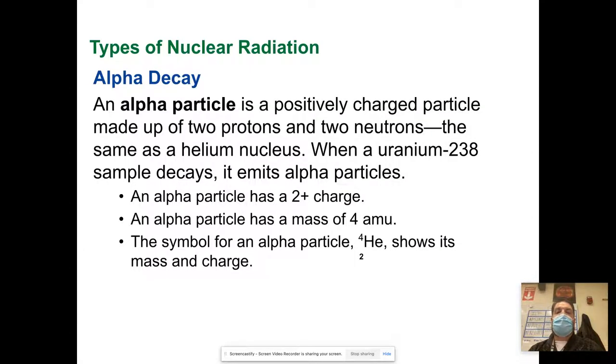An alpha particle is a positively charged particle made up of two protons and two neutrons, the same as the helium nucleus but it doesn't have electrons. If you were to take a helium nucleus and strip it of its electrons, we would call that an alpha particle.